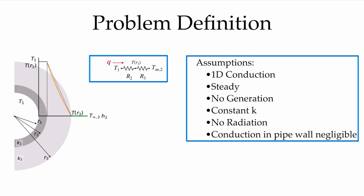In so doing, we'll get rid of the first resistance. We'll go directly from the temperature inside the pipe, through our resistance through the insulation, and our convection resistance out to the ambient conditions.